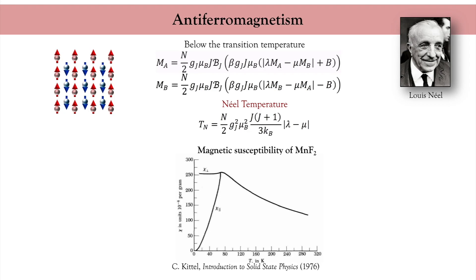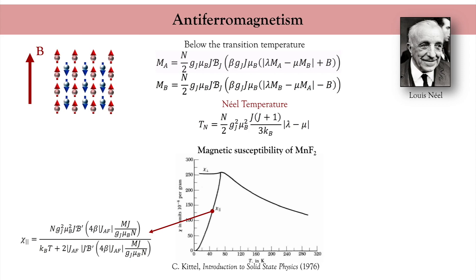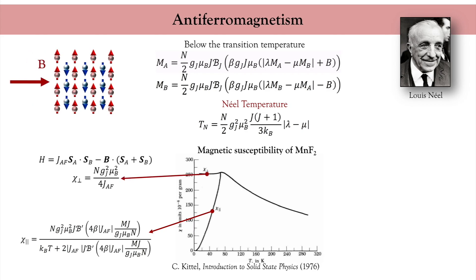Below the Néel temperature, the susceptibility depends on whether the magnetic field is applied along or perpendicular to the magnetic order. If the field is applied along the magnetic order, the susceptibility has a complex expression that comes from expanding the magnetization of the individual sublattices to first order in the field B, and the longitudinal susceptibility increases sharply with temperature. If the magnetic field is applied perpendicular to the magnetic order, the magnetization of the two sublattices tilts away from their rest position and progressively aligns along the field. The transverse susceptibility is obtained by minimizing a simple Hamiltonian and is found to be independent of temperature and inversely proportional to the antiferromagnetic exchange.